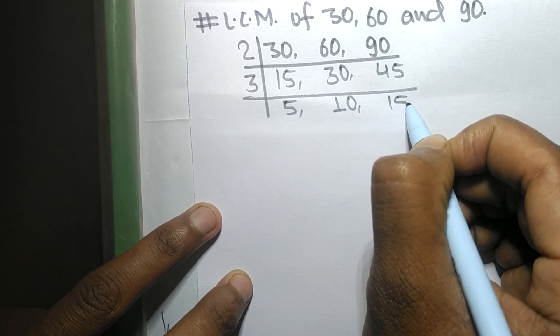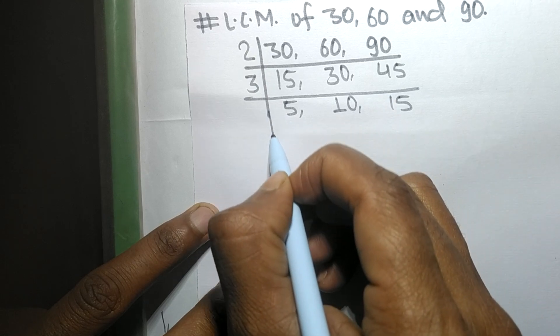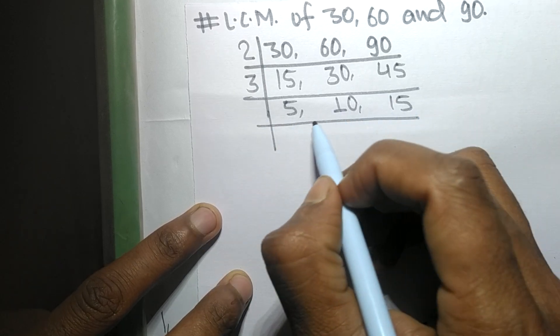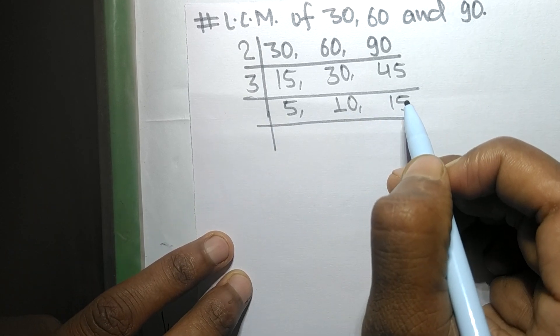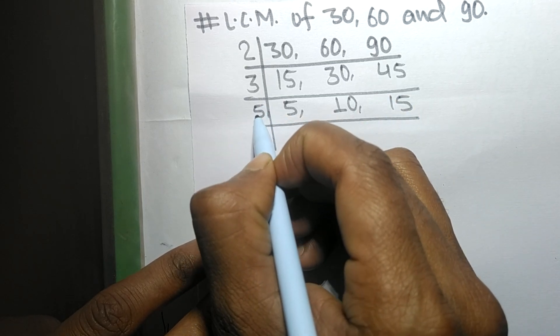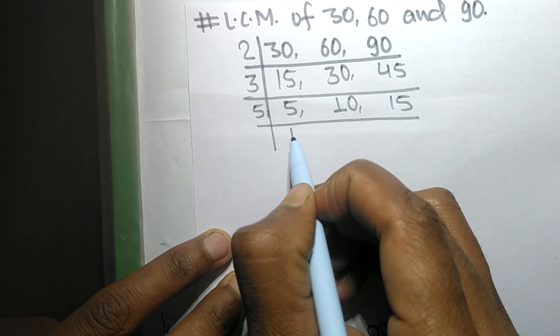3 times 15 means 45. Now these all numbers are exactly divisible by 5. So 5 times 1 means